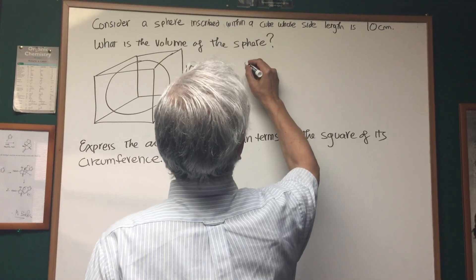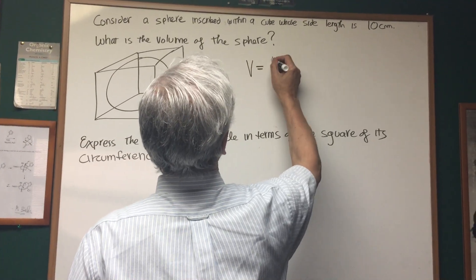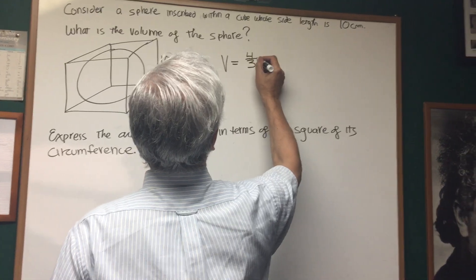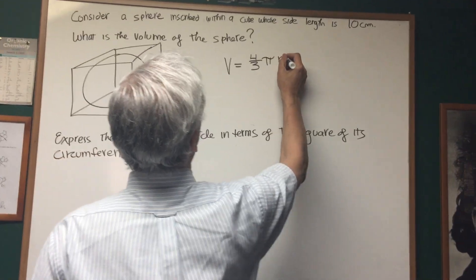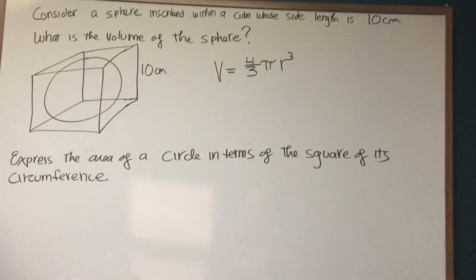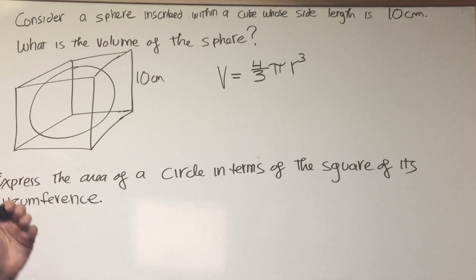First, we have to know what the formula for the volume of a sphere is. Four-thirds pi r cubed. So the only unknown quantity is what is the radius of the sphere?